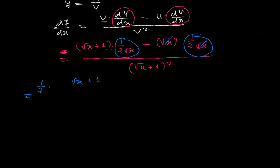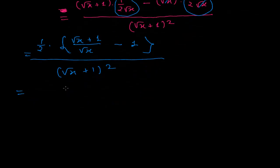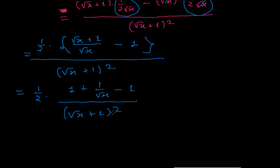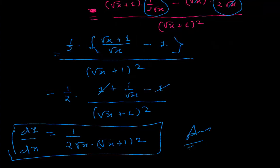Taking 1 by 2 outside, we have root x plus 1 minus 1 in the numerator, divided by root x plus 1 whole square. Cancelling root x plus 1 from numerator and denominator, we are left with dy/dx equals 1 by 2 root x times root x plus 1 whole square. This is the derivative we needed to find. I hope you understand how to find the derivative using the quotient rule. See you in the next video, bye bye.